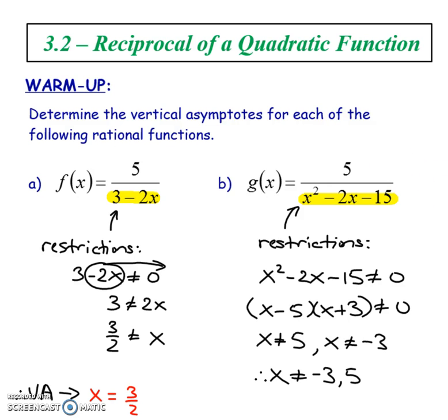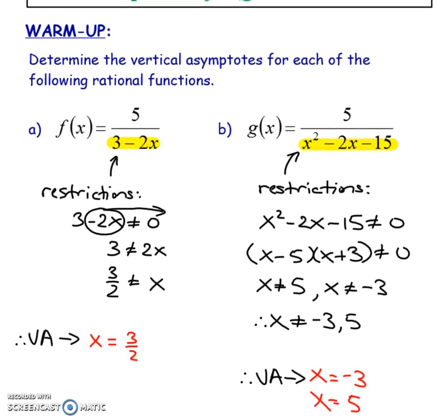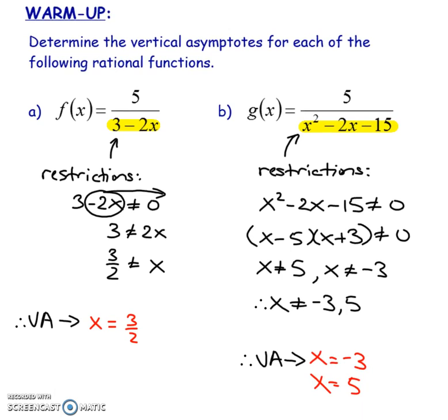With both of them, I'm going to find the vertical asymptotes. We do that by finding the restrictions in the denominator.